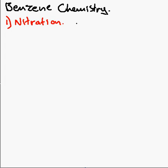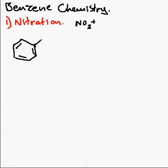The first example we're going to look at is nitration, which involves an NO₂⁺ species, which is made from concentrated nitric and concentrated sulfuric acid. Now that reacts with the benzene, and the first way we're going to look at that is with the Kekulé structure, which is where you have three sets of double bonds all the way around. We'll draw on the hydrogen that's involved in this reaction.